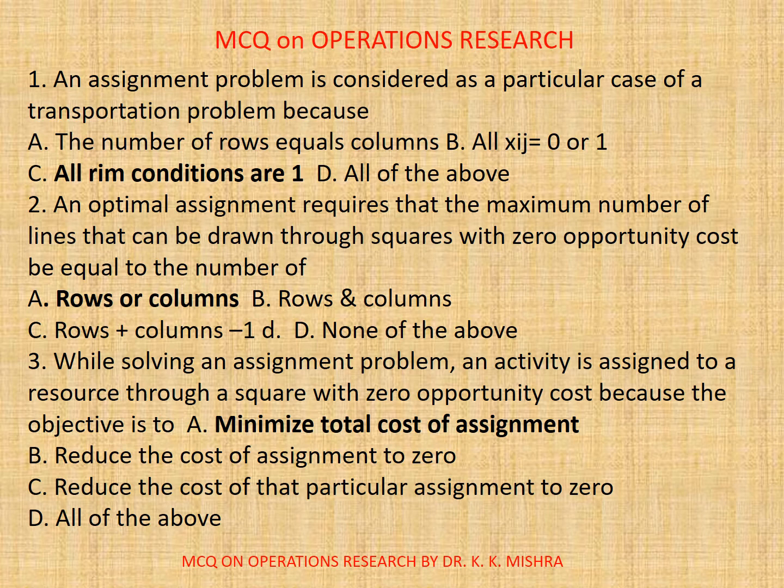Question 3. While solving an assignment problem, an activity is assigned to a resource through a square with zero opportunity cost because the objective is to: A. Minimize total cost of assignment. B. Reduce the cost of assignment to 0. C. Reduce the cost of that particular assignment to 0. D. All of the above. The correct option is A: Minimize total cost of assignment.